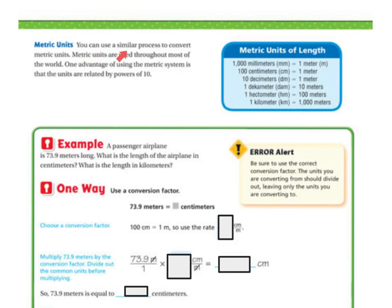Metric units. You can use similar processes to convert metric units. Metric units are used throughout most of the world. One advantage of using the metric system is that units are related by powers of 10. So we've got 1,000 millimeters is 1 meter. 100 centimeters is 1 meter. 10 centimeters is 1 meter. 1 decameter is 10 meters. 1 hectometer is 100 meters. 1 kilometer is 1,000 meters.